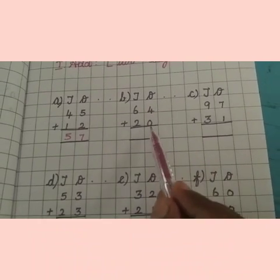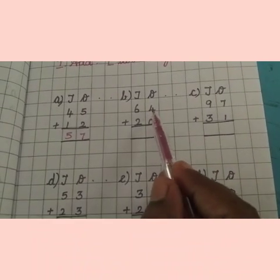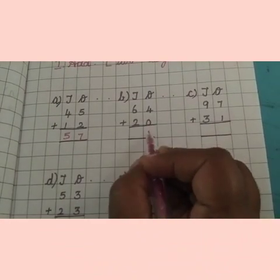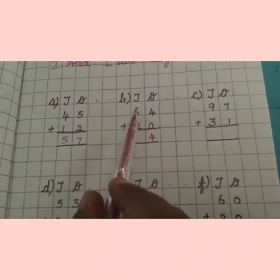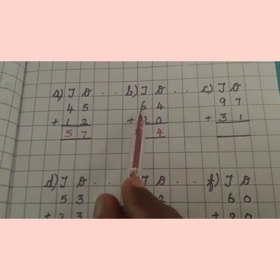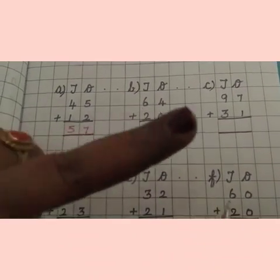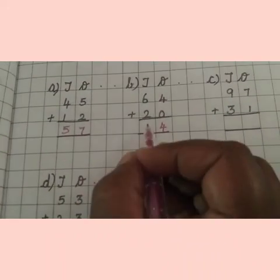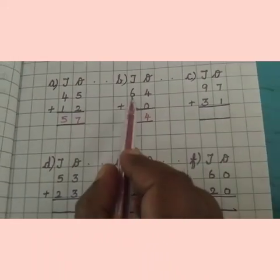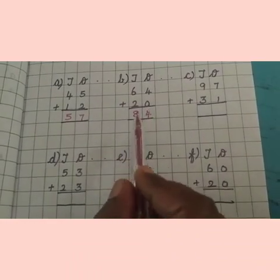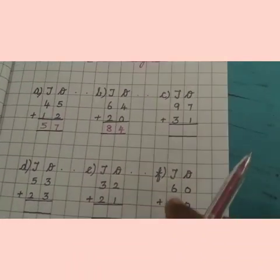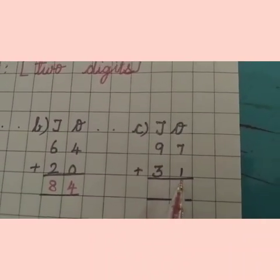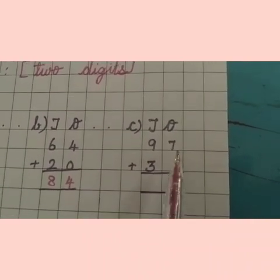Next one: 64 plus 20. Four ones, zero ones. We have to add the ones place — four in the mind, zero is nothing, so write the same number: four. Next, tens place: six plus two — six in the mind, two in the finger — after six: seven, eight. Answer is eight. 64 plus 20 is 84.